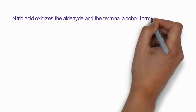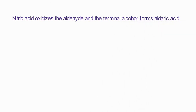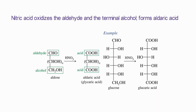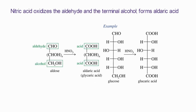Similarly, nitric acid oxidizes both the aldehyde and the terminal alcohol, forming aldaric acid. You can see that the alcohol part and the aldehyde part are both oxidized by nitric acid to form a product which has two carboxylic acid groups.